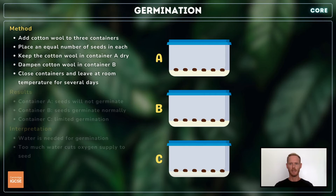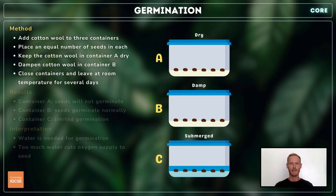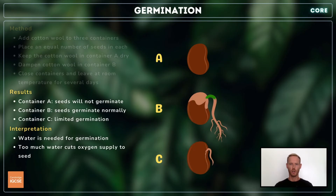To investigate the effect of water, add cotton wool to three containers and place an equal number of soaked seeds in all three. Keep the cotton wool in container A dry, add a small amount of water to the cotton wool in container B, making it moist, and completely submerge the seeds in container C. Close the containers and leave at room temperature for several days. The seeds in container A will not germinate due to a lack of water, the seeds in container B will germinate normally, and the seeds in container C may start to germinate but will not be as developed as those in container B. This is because too much water cuts down the oxygen supply to the seed.